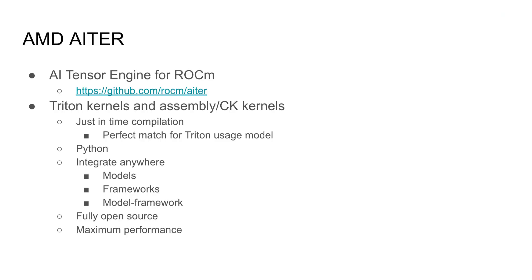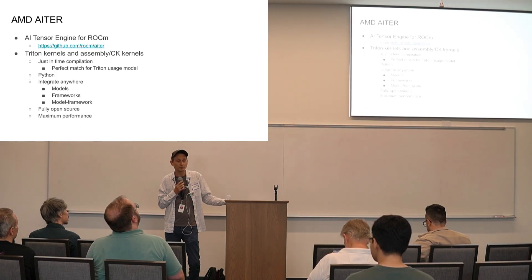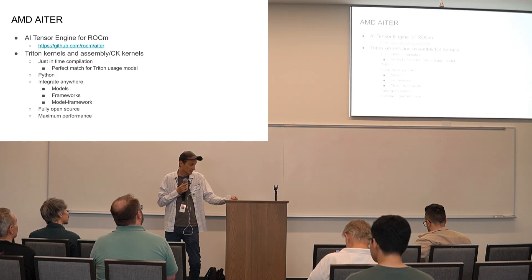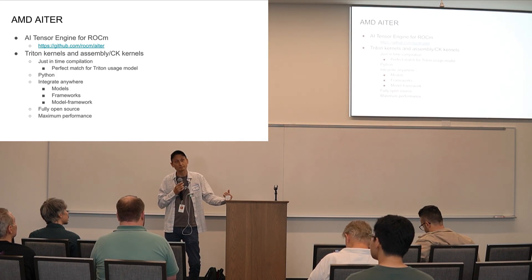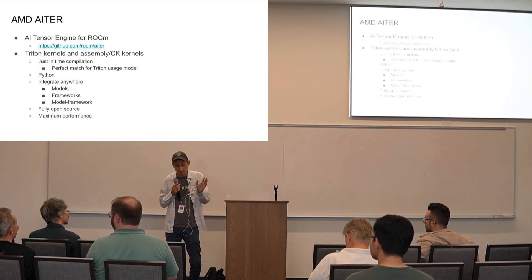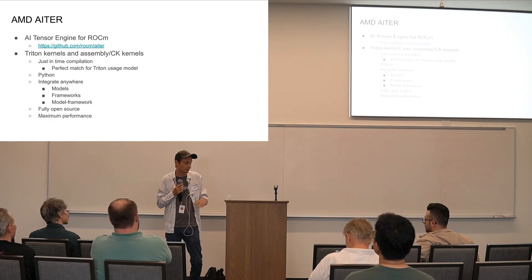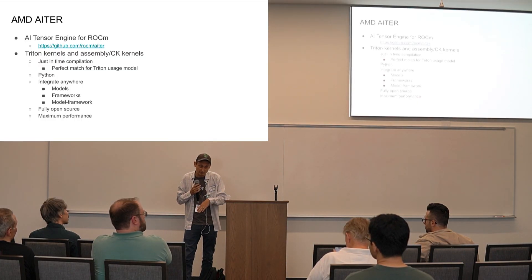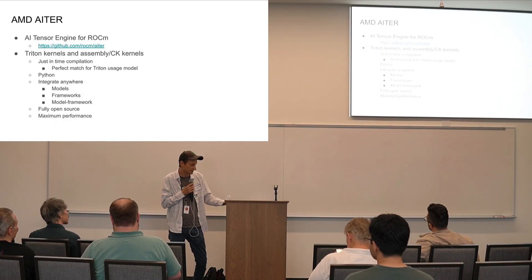Another interesting example of how we're using Triton is our ADAR library, which is pretty brand new. Similar to a team that wrote a bunch of Triton kernels in three months, ADAR came together in about the same timeframe. It's basically a set of highly optimal kernels for a lot of the famous LLMs out there right now. We have Triton versions of everything in there, as well as CK — our Cutlass-like library — and assembly versions for highly tuned kernels.